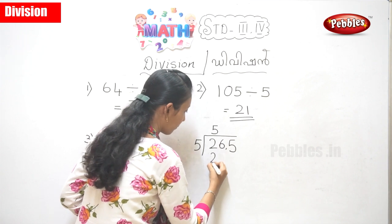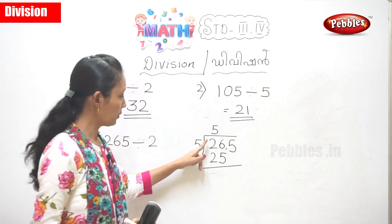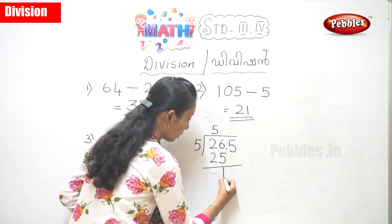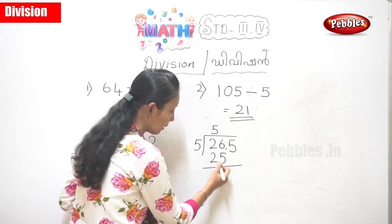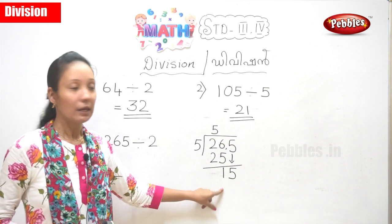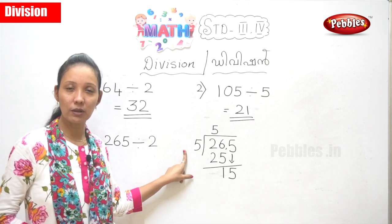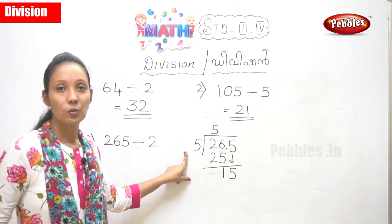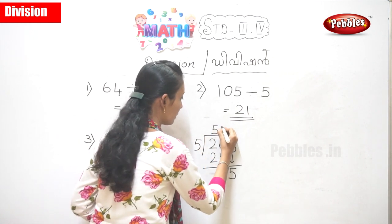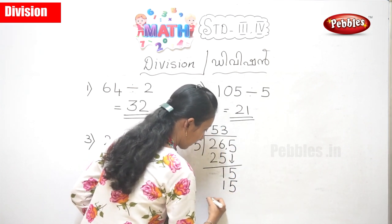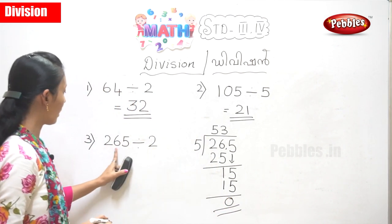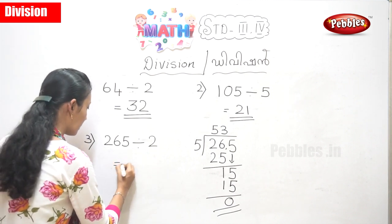After you find 25, you need to minus it from 26. Then you bring down your 5. Now you have 15. Five into 15 — how many times? Three into five. So the answer is 3, and three fives are fifteen. Fifteen minus fifteen is zero. So your answer — 265 divided by 5 — your answer is 53.